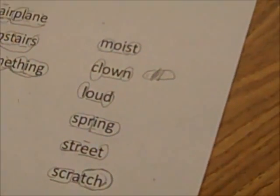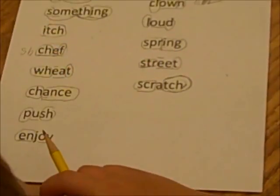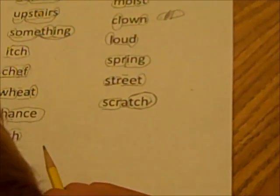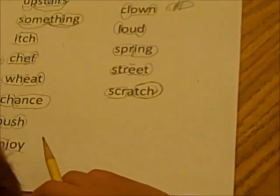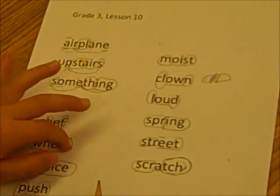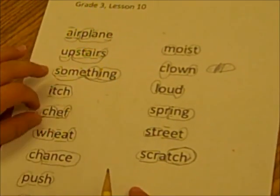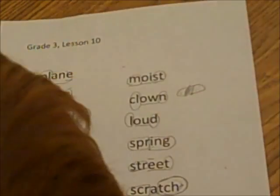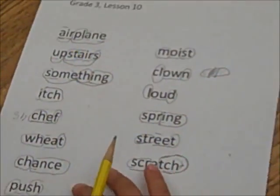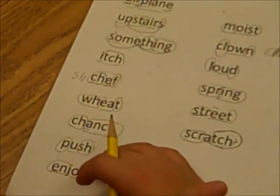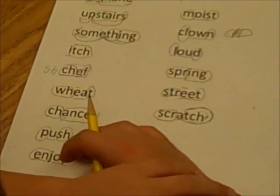Excellent, guys. Good job. We've had all of these words, haven't we? Because it's a review lesson. Okay, I'll give you a whiteboard — you guys can practice writing them.